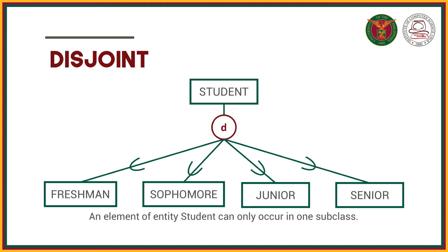In this example, we have a superclass student with subclasses freshman, sophomore, junior, and senior. When it is disjoint, a student can only belong to one subtype — freshman only, or sophomore only — it cannot belong to two, three, or all of them at once.